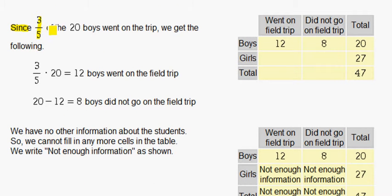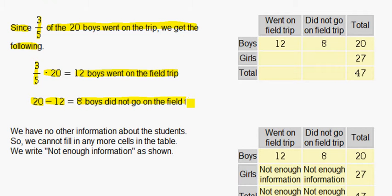Since 3 out of 5 of the 20 boys went on the trip, we get the following: 3 out of 5 times 20 is 12 boys went on the field trip. 20 minus 12 equals 8 boys did not go on the field trip. So for boys, 12 went on the field trip and 8 did not go on the field trip.